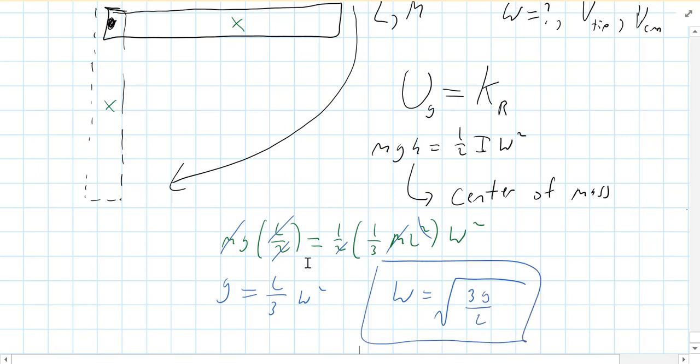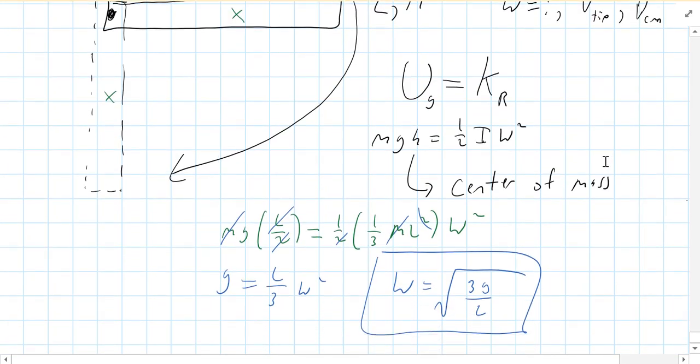And then, so notice the only thing that matters there is L as far as the bar goes. The bigger the L, the slower it's going to be going when it gets to the bar.